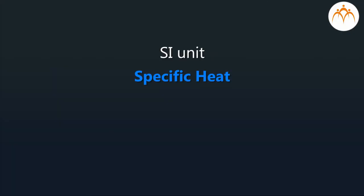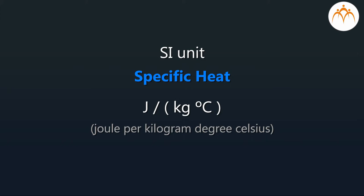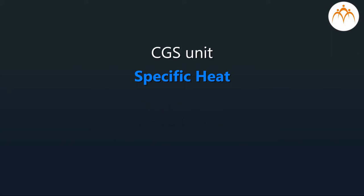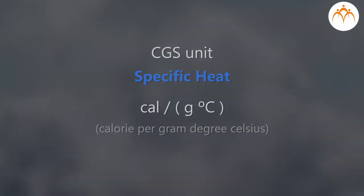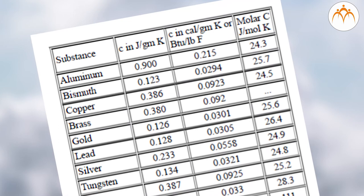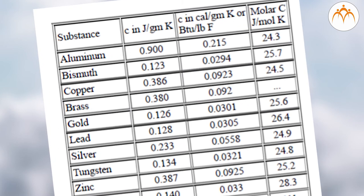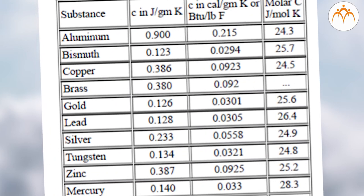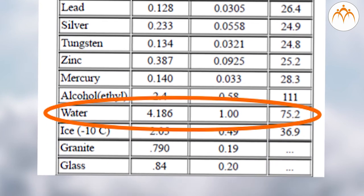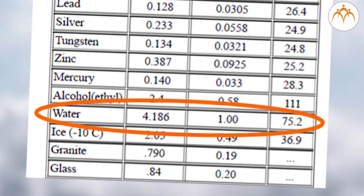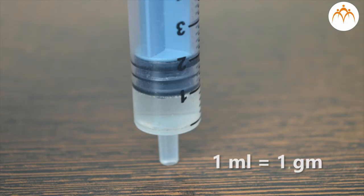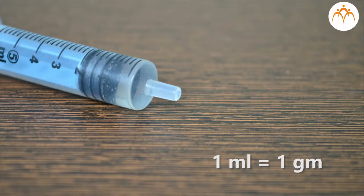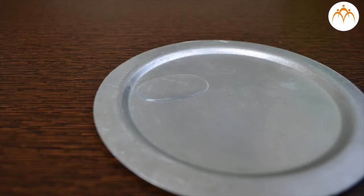The SI unit of specific heat is joule per kilogram degree Celsius, and the CGS unit of specific heat is calorie per gram degree Celsius. Scientists have already measured specific heat for various substances. For water, it is 1 calorie per gram degree Celsius, meaning you will need to provide 1 calorie of heat to raise the temperature of 1 gram of water by 1 degree Celsius.